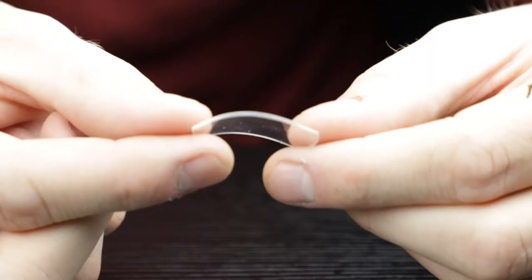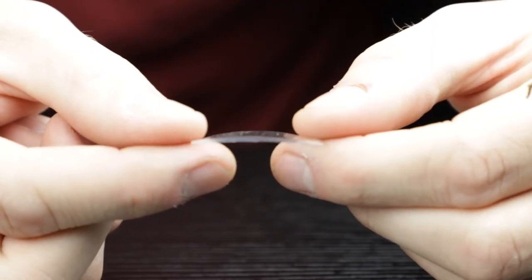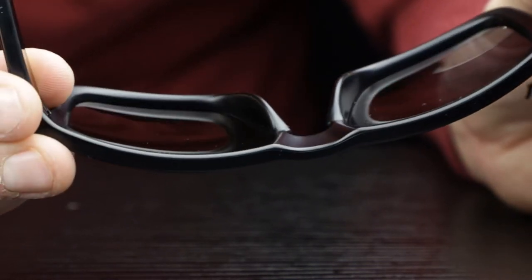Some things to note before we get started. When you open your stick-to-it stick-on bifocals, you'll notice that the lenses have a natural curve to them. Be sure to apply these to match the natural curve of the glasses. This will ensure a good secure fit.